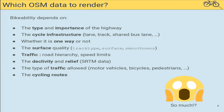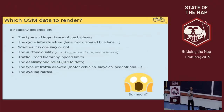One of the biggest challenges was that we had many features to render. Here is a list of the features and data we use in OpenStreetMap. First is the type and importance of different highways. Then the cycle infrastructure: tracks, lanes, and shared bus lanes. Whether a road is one-way or not for vehicles and for bicycles. The surface quality — using track type, surface, and smoothness tags — because on a road bike, you don't want to go on a gravel track.